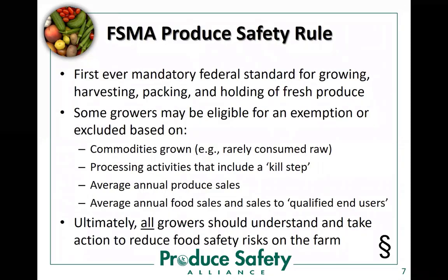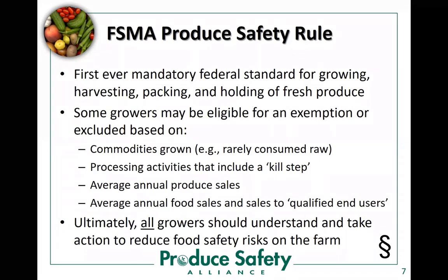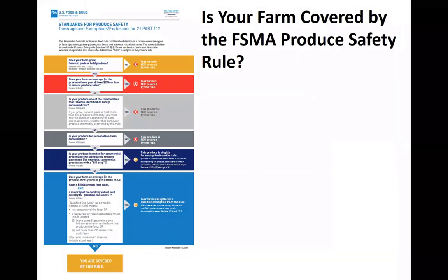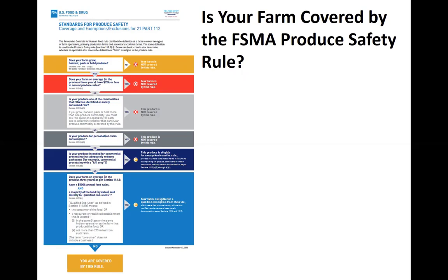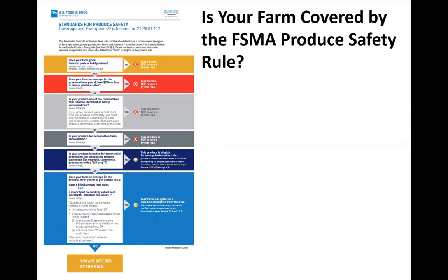That brings us to slide 7, where exemptions and exclusions are covered. I ask growers to flip to the first page of the FDA/USDA resources tab in the manual — to this flow chart — and then we walk through it question by question. It's important that growers know if their farm is covered or not before we dive into rule requirements. I walk them through this fact sheet after slide 7, but you could also cover it before you begin Module 1, or design your own slides that walk through these questions.